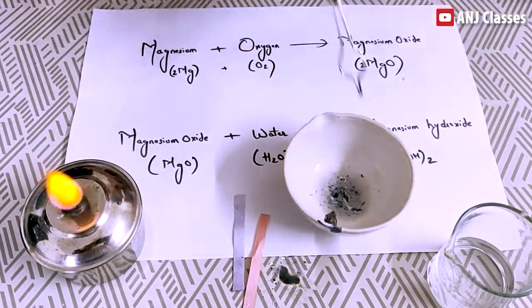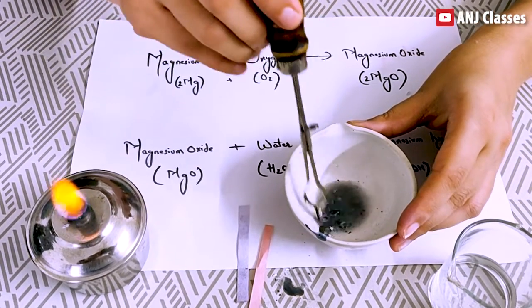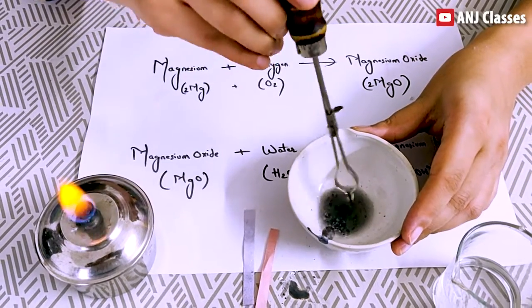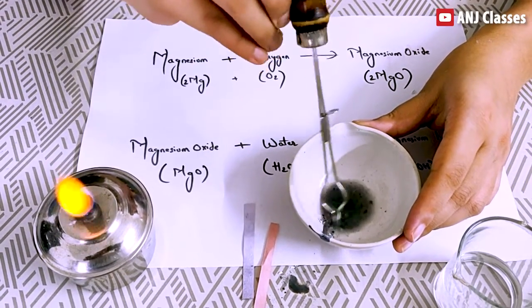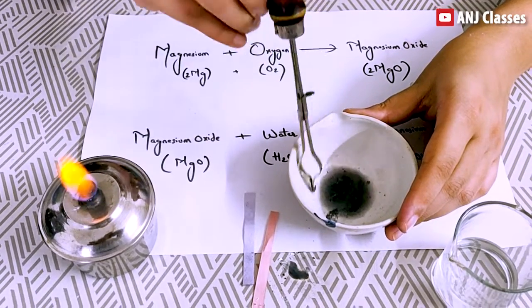You have seen as magnesium burns, metals combine to form magnesium oxide and I have added water to form magnesium hydroxide. Now we will test it with red and blue litmus paper.